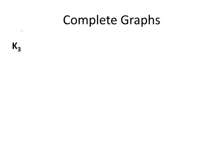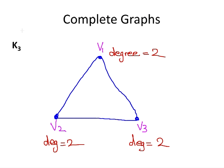Now, let's look at K3. There are three vertices, V1, V2, V3 and for each of these vertices, they all have degree 2. And the number of edges is 3.